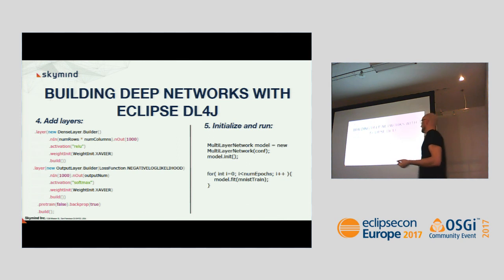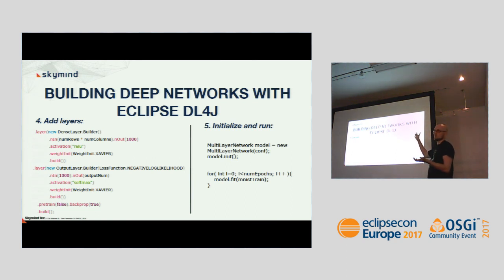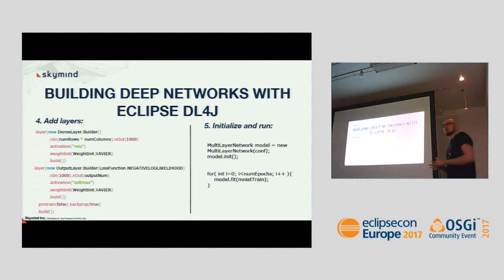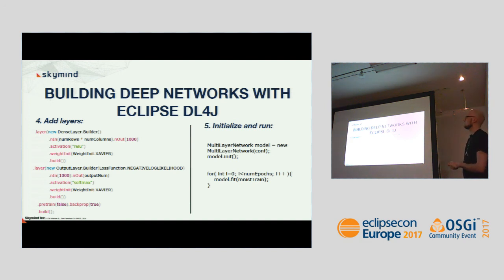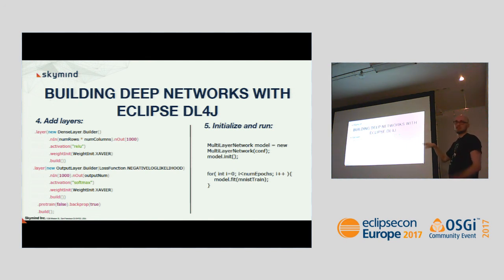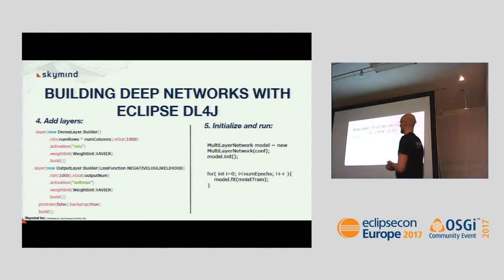Then you start adding layers. In this simple example, we have one dense layer with num_rows times num_columns input fields — 28 times 28 pixels — and 1,000 output neurons, randomly chosen. On top of that, we build an output layer that maps those 1,000 neurons to the desired 10 outputs. We could easily stack many more layers; this is chosen to fit on the slide, but we could have four layers of 10 instead.